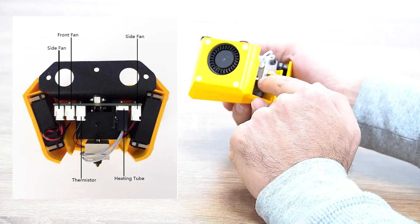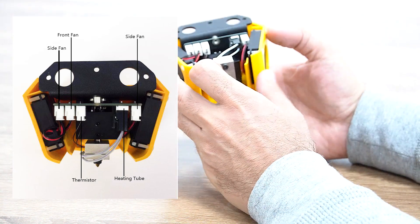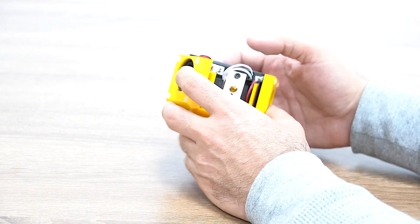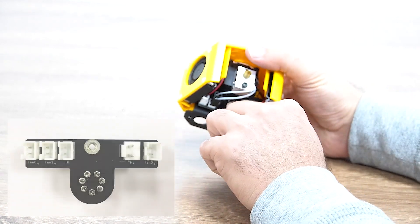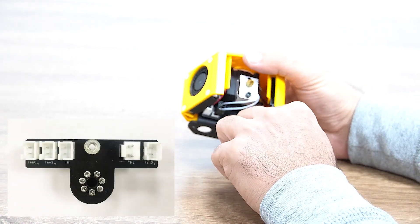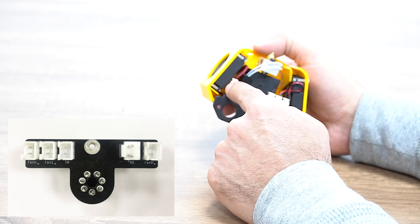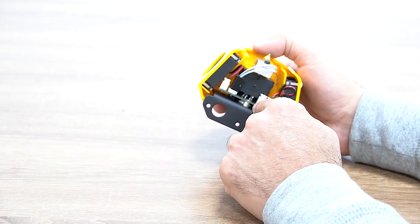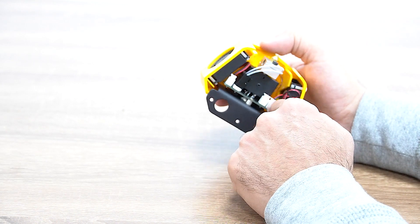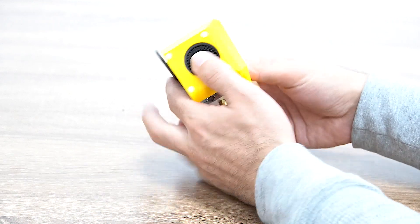In any case you unplug any of these cables, just don't be worried because there are letters written down there. For example, this one is for the heating tube, this one is for the fan, these two are the fans, the right and left one, this one is for the thermistor, and the one here for the front fan.